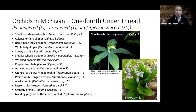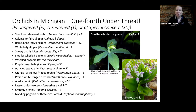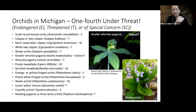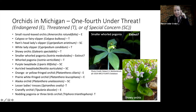About 15 species out of our 57 are protected under state laws. The small whorled pogonia is currently labeled extinct — it has not been found in a while. In the upcoming slides, you'll see a little T, E, or SC next to orchid names indicating threatened, endangered, or special concern status.